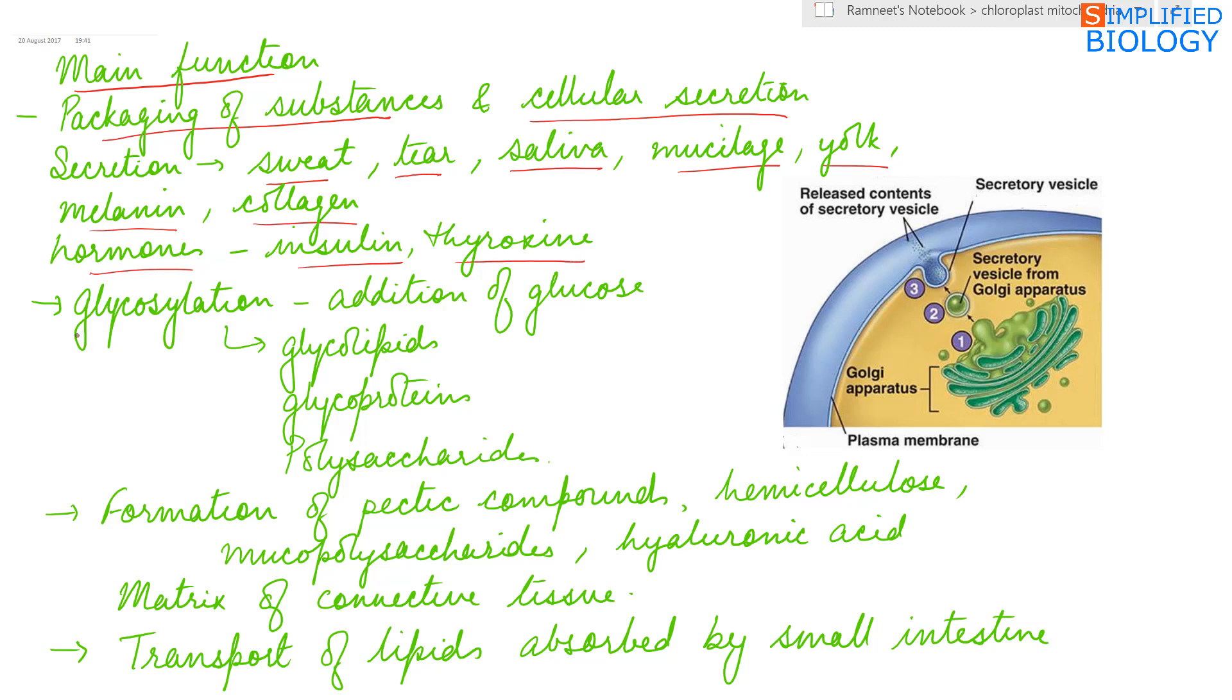Glycosylation occurs inside the Golgi complex. Glycosylation is addition of glucose by the help of glycosyl transferase enzyme to form glycolipids, glycoproteins and polysaccharides.